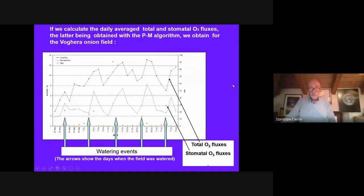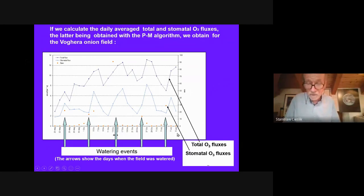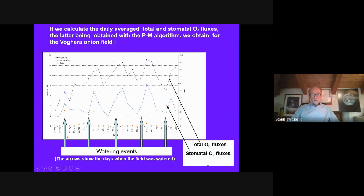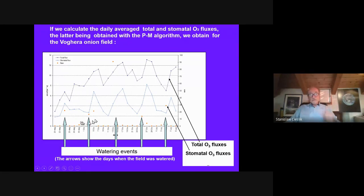This is the onion campaign data from 20 May to 9 July (the harvest). The upper curve is the total flux and the lower curve is the stomatal flux. The green arrows are watering events — irrigation made roughly every week. Just after each watering, there is a strong peak of stomatal flux of ozone. These peaks correspond also to the total flux, since the total flux is the sum of the stomatal flux and other factors. The stomatal flux is very important and determines the ozone fluxes in general.